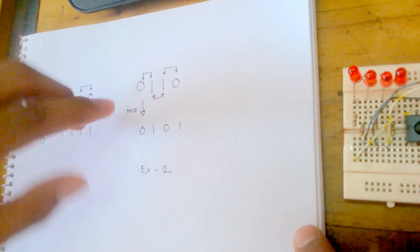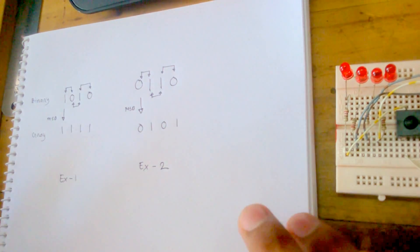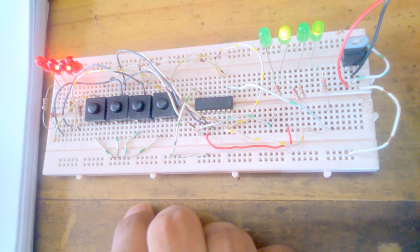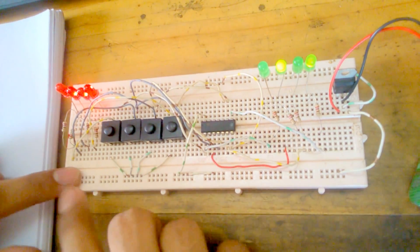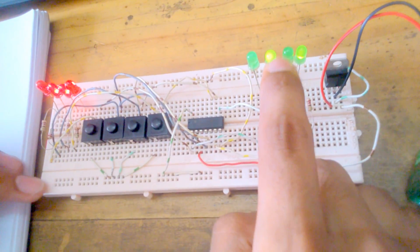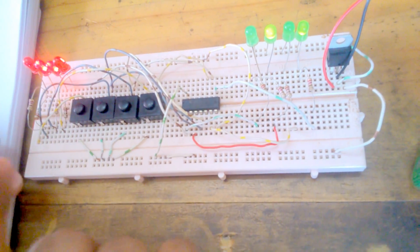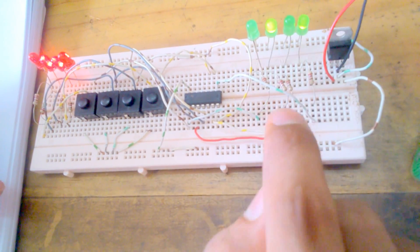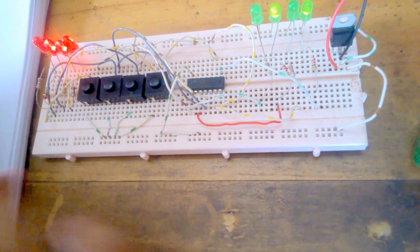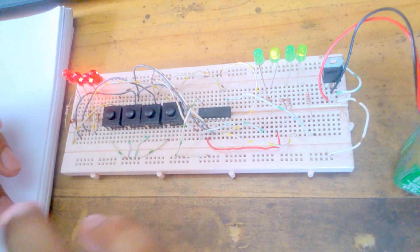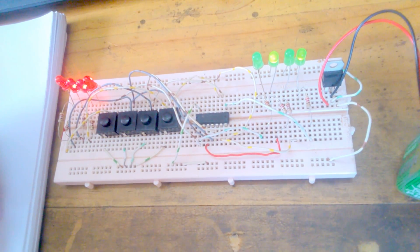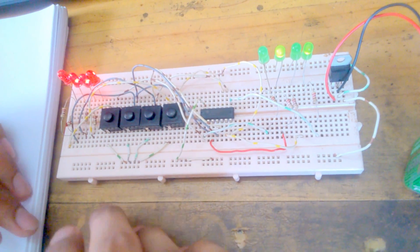Another example: the four-bit binary is 0110. MSB is unchanged. On the breadboard, input is zero one one zero, and the output is zero one zero one. The MSB is unchanged. XORing the first two bits, we get the second gray output. XORing the second and third bits, we get the third output. XORing the third and fourth bits of our binary, we get our fourth gray code. With XOR, if any one input is high, output is high; if both inputs are the same — both high or both low — output is low. That's all for the implementation part.